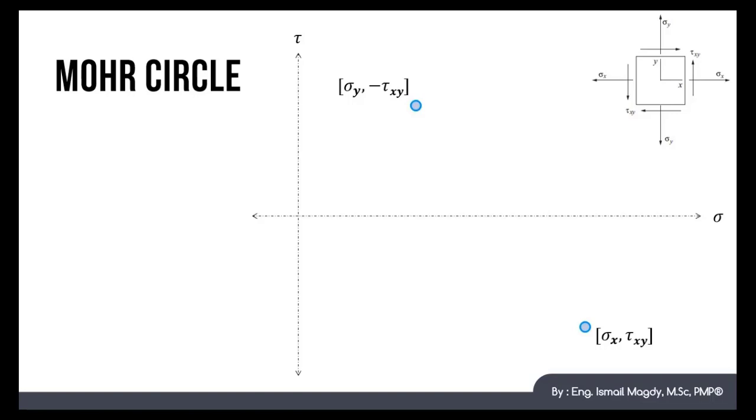The line between those two points defines the diameter of Mohr's Circle, which now we can draw. Each point on this circle represents the normal and shear stress in the element at a specific orientation.